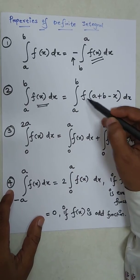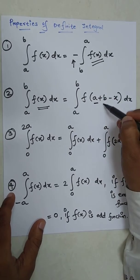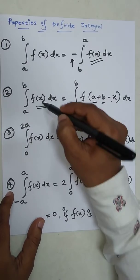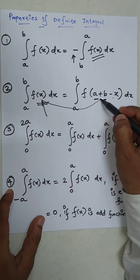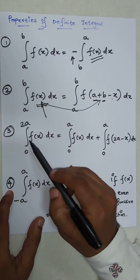f of lower limit plus upper limit minus x. Instead of x we will write this thing.